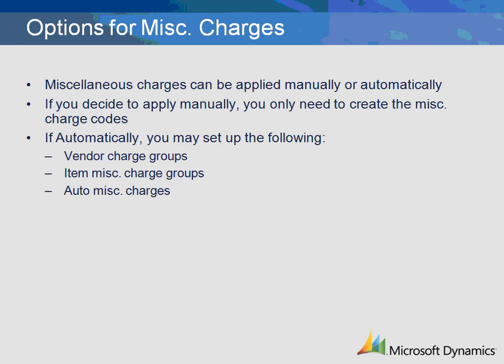In trying to decide on a setup, you should first decide if the charges should be entered manually or happen automatically. If you desire to automate miscellaneous charges, you need to determine whether the trigger is the vendor selected for the purchase order, the item selected for the purchase order, or a combination of both. This decision will drive which of the forms you need to complete.